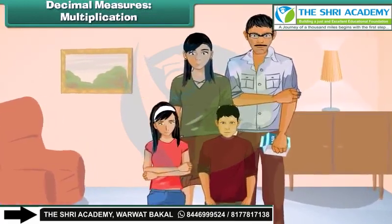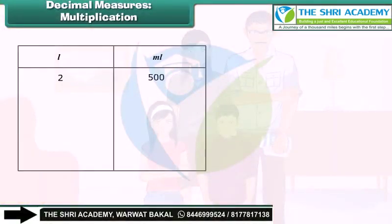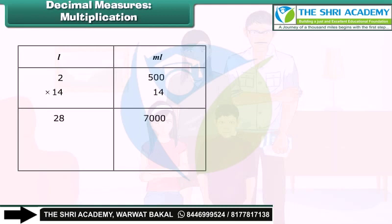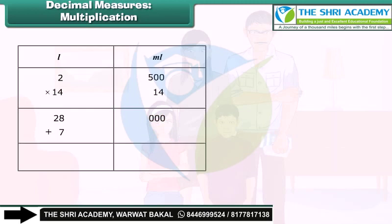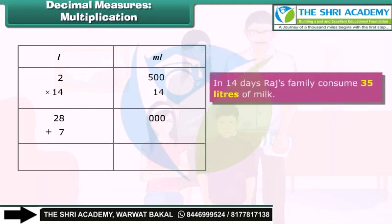Raju's family has a consumption of 2 liters and 500 milliliters of milk per day. How much milk is consumed in 14 days? Multiplying 14 by 2 liters and 500 milliliters, we get 28 liters and 7,000 milliliters. Since 1,000 milliliters equals 1 liter, 7,000 milliliters equals 7 liters. Adding 7 liters to 28 liters, Raju's family consumes 35 liters of milk in 14 days.